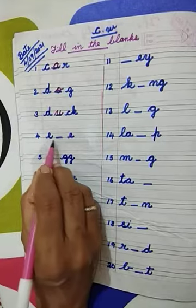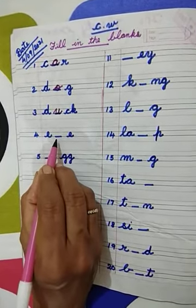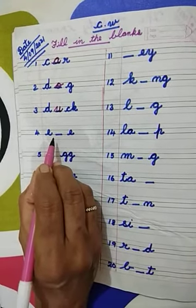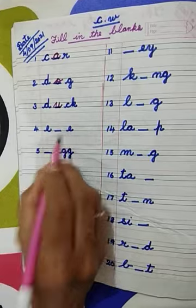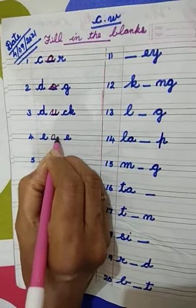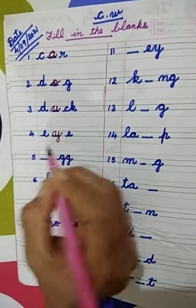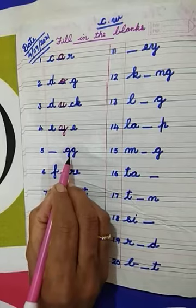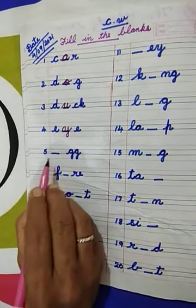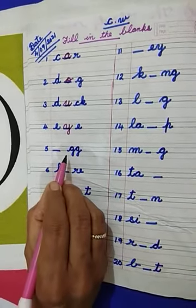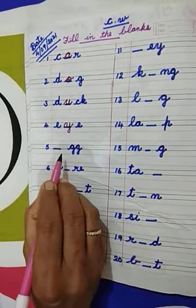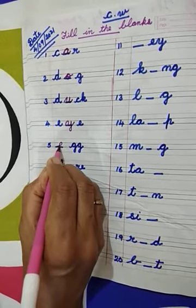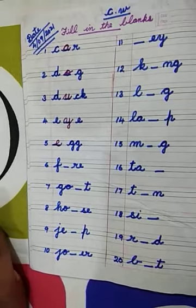Number 4: E-E. The middle letter is missing here. This is the spelling of eye: E-Y-E. The letter Y is missing here. We have to write here letter Y and complete the spelling. Number 5: D-Egg. The first letter is missing. Egg. Spelling of egg: E-E-E. First letter is E. We have to write here letter E and complete the weight egg.